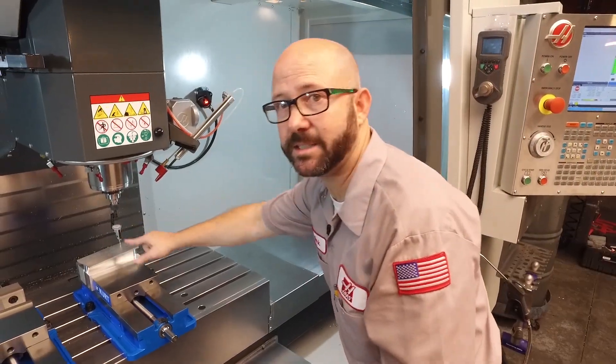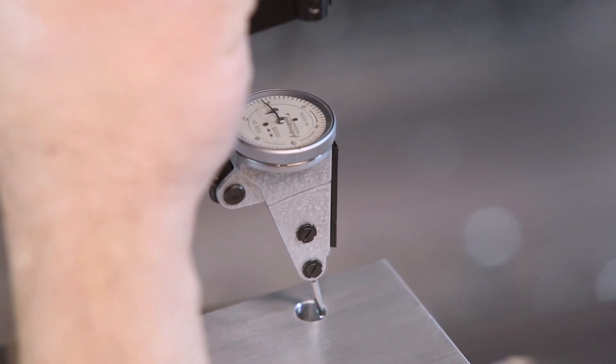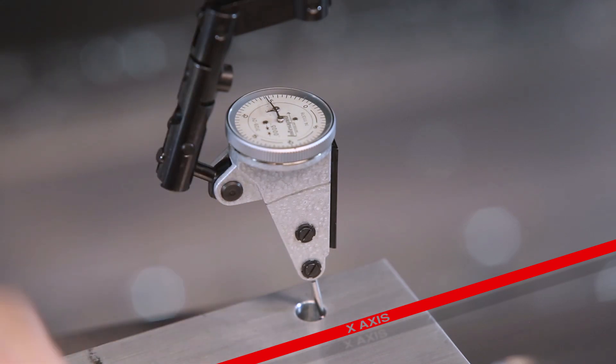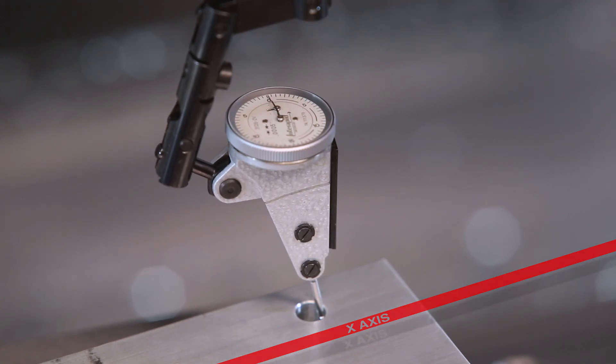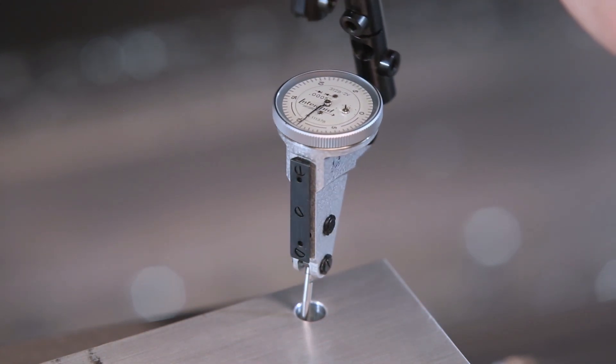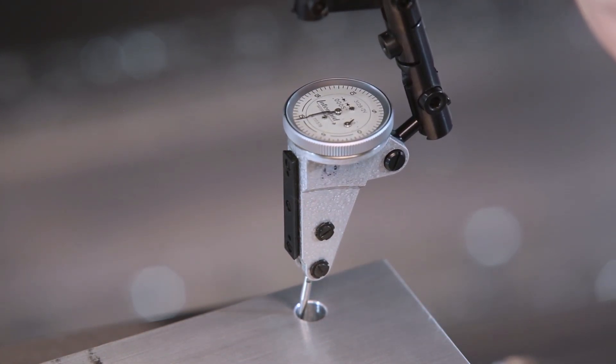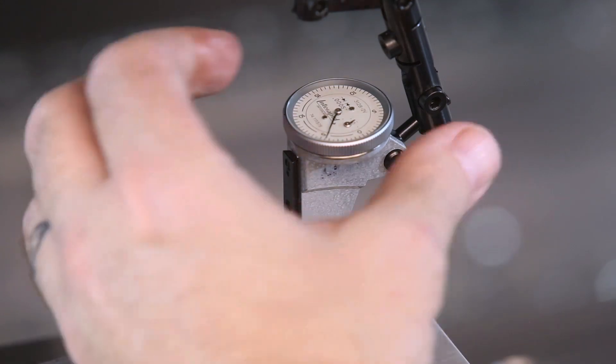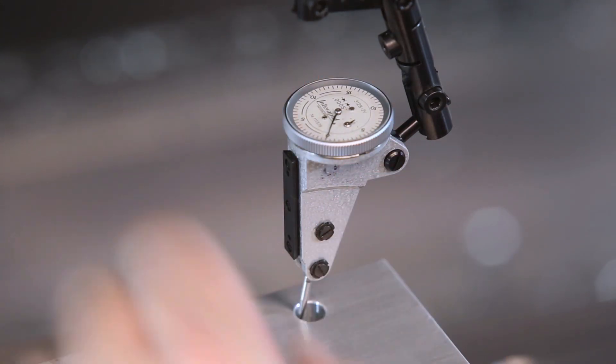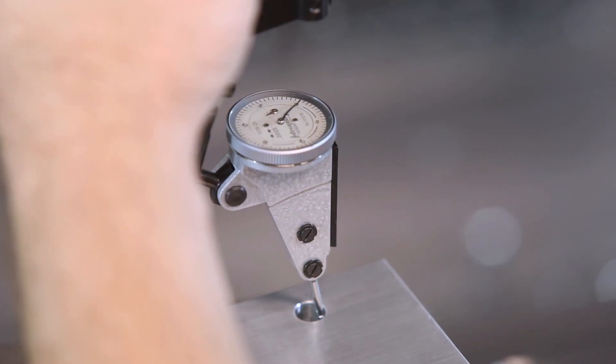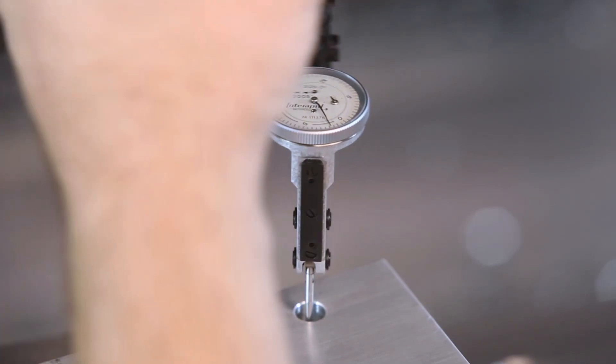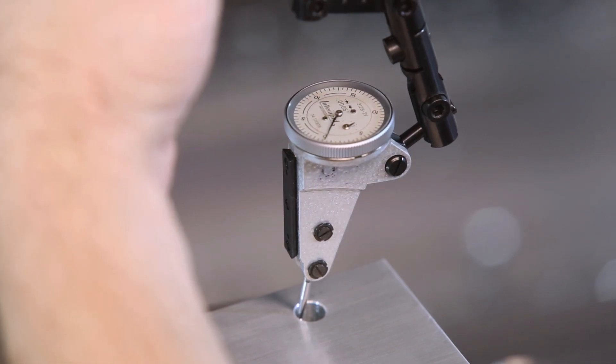Now that I've made contact, I'm gonna rotate this so my indicator is following my X axis. Once there, I'm going to zero out my indicator. Now, I'm gonna rotate my indicator 180 degrees and see what my numbers are. It looks like I'm off by about 10 thou. So what I wanna do is split the difference. I'm gonna jog about 5 thousandths of an inch to the right, and then I'm gonna re-zero my indicator. I'm gonna keep doing this, going back and forth along the X axis only until my indicator needle reads zero, facing both ways, both to the right and to the left.